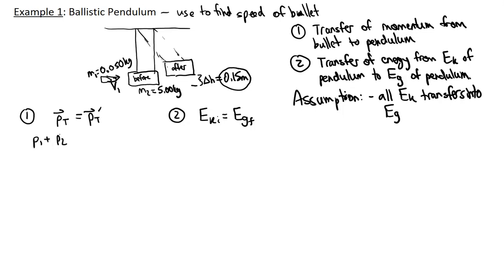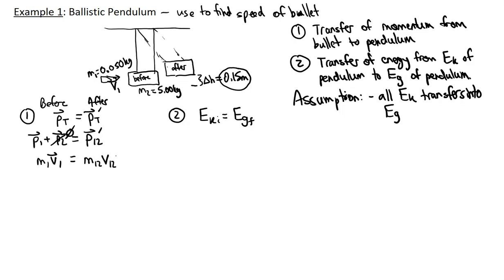For part one, P1 plus P2 initially — the pendulum is not moving, so its momentum is zero. The only momentum is M1·V1 from the bullet. After the collision, the bullet is stuck in the pendulum, so we have M1,2 (the combined mass) times V1,2 prime (the velocity of the combined system). We know both masses, but we don't know V1 or V1,2 prime. So we have two unknowns and move on to the energy equation.